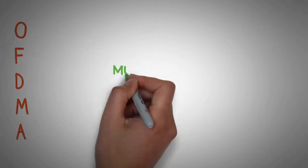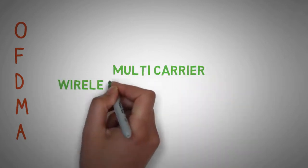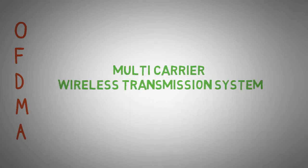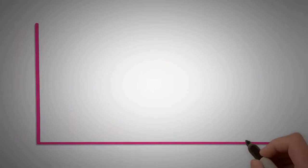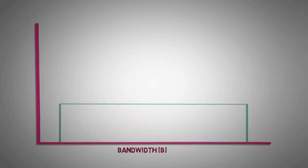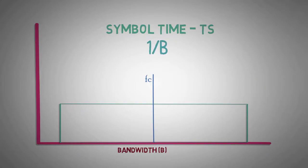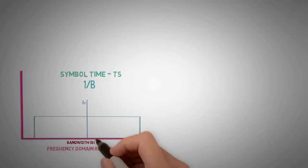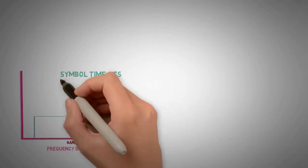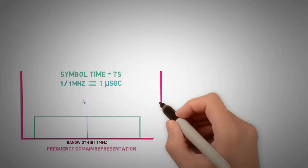Before diving into OFDMA, let us understand multi-carrier wireless transmission systems. Suppose a signal is to be transmitted over a bandwidth B and carrier frequency FC. Then symbol time for this would be TS equal to 1 by B. For a single carrier wideband channel of, let's say, 1 MHz, the symbol time will be 1 microsecond.